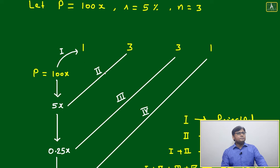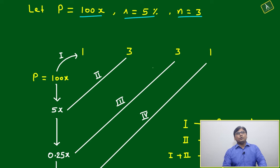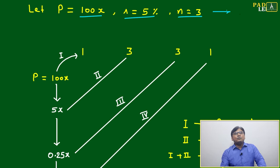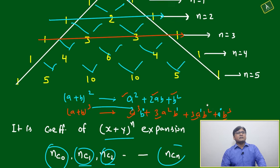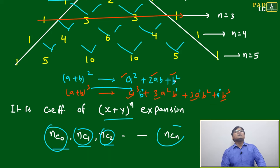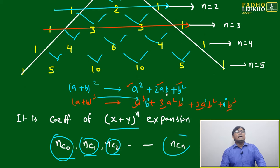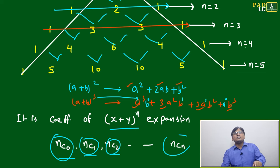Let's take a simple example: principal amount is 100x, r is 5% annually, n equal to 3. Since n equals 3, you take the third line from Pascal's triangle. The third line coefficients are 1, 3, 3, 1. If n equals 4 — where n is the number of years — then the coefficients are 1, 4, 6, 4, 1.